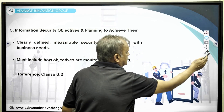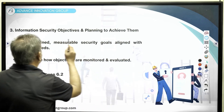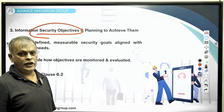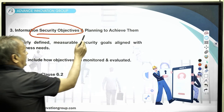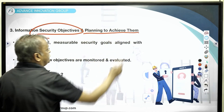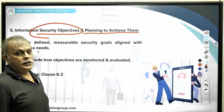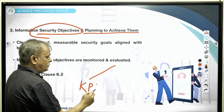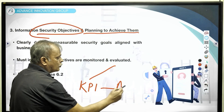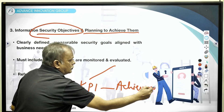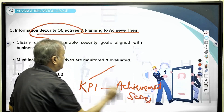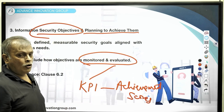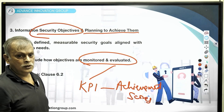The third set of documents is your security objectives. You need information security KPIs to be put in place, and how you plan to achieve them is another set of documents the ISO auditor will look at. A list of KPIs and their achievement scores, how they are to be monitored and evaluated — all become auditable documents from an ISO 27001:2022 standpoint.